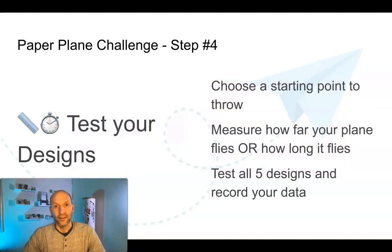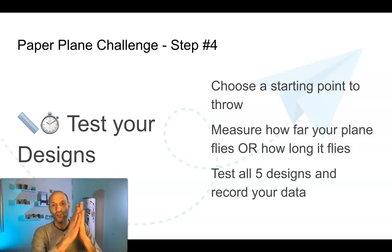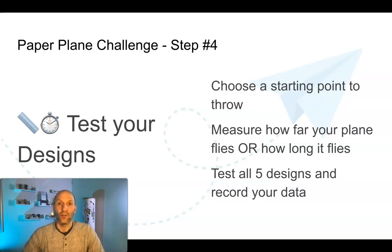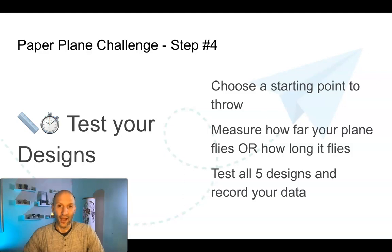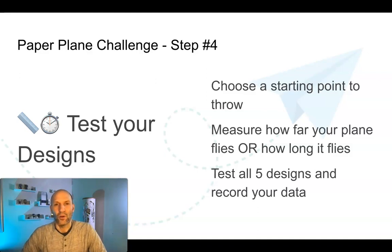Now that you've created your five paper airplanes, it's time to test them. You have to start in the same place each time. For challenges one and three, measure the distance from where you start to where your plane lands. For challenge two, you'll need a stopwatch — most phones have that feature built in. Pick a consistent spot in your house to always start from, toss each plane, and you may need to throw a few times to get a fair result. If a throw wasn't effective, you can always try again and record the better data.